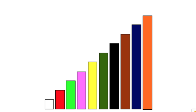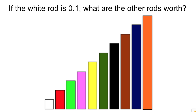Consider our rods again — we've already arranged them in order of size. This time, let's ask a slightly different question. If the white rod is 0.1, what are the other rods worth? Pause the video and write down your answers. So if the white rod is worth 0.1, the second rod is double that size at 0.2, and they go up by 0.1 each time, all the way until the orange rod has a value of 1.0. Now that we're using decimals to represent these rods, let's do some decimal division questions.